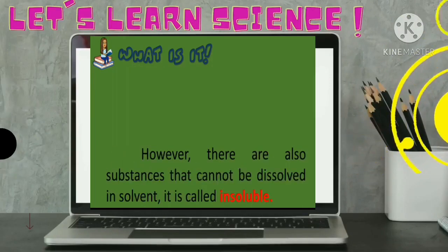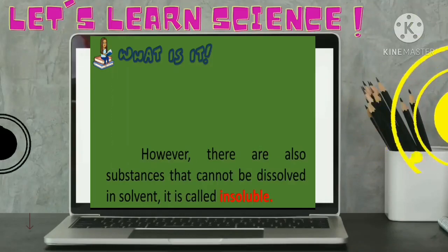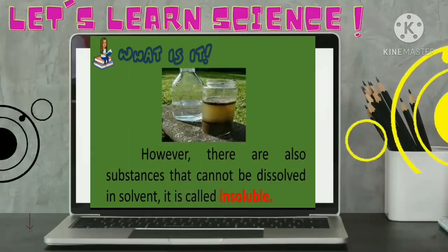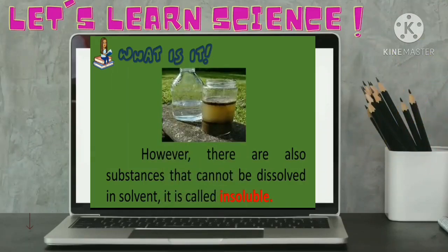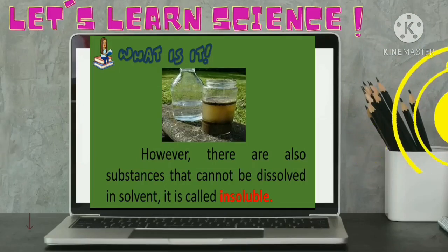However, there are also substances that cannot be dissolved in solvent. They are called insoluble. Example of insoluble substance would be the sand when mixed with water. Sand is an insoluble substance.